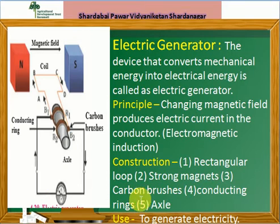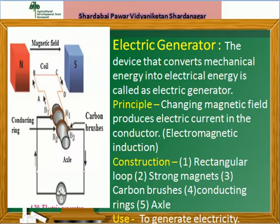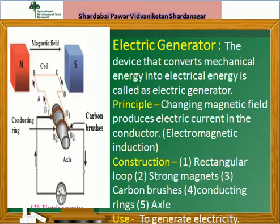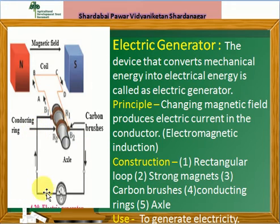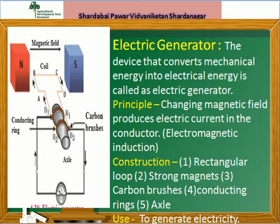त्याचा use कुठे आहे — to generate electricity. हे त्याचे महत्त्वाचे principle आहे. Generator नावातच आहे की तो electricity generate करतो. याचे working लिहताना — it is based on Fleming's Right Hand Rule — हे पहिले सांगितले पाहिजे. आणि Fleming's Right Hand Rule नुसार electromagnetic induction चा संबंध, आणि नंतर after half rotation कसे B2 brush कडून B1 कडे आणि B1 कडून B2 कडे current travel होते ते सांगणे आवश्यक आहे. तर friends, electric generator हा point संपतो. हा स्वाध्याय पूर्ण करा आणि पुढील chapter साठी तयार व्हा. धन्यवाद।